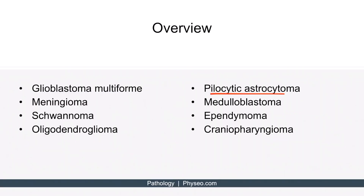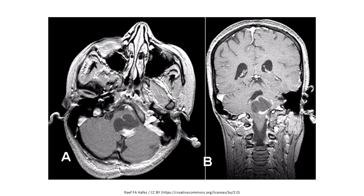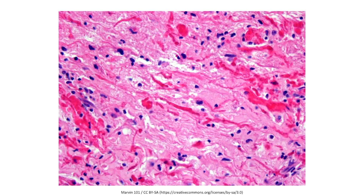Let's discuss pilocytic astrocytoma. This is a benign tumor of astrocytes and is the most common primary CNS tumor in childhood. The tumor commonly involves the cerebellum, and the tumor cells are GFAP positive. On imaging, a large cystic lesion with a brightly enhancing mural nodule can be observed. Rosenthal fibers, which are thick eosinophilic corkscrew-appearing fibers, can be found on biopsy. Here are MRI images showing the mass located in the cerebellum with a large cystic lesion and brightly enhancing mural nodule. The histological image shows the reddish corkscrew appearance of Rosenthal fibers.